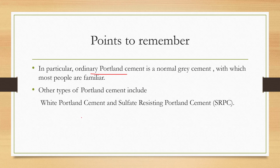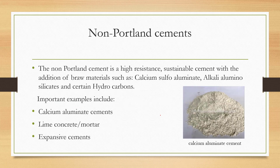Points to remember: ordinary Portland cement is a normal gray cement with which most people are familiar. Other types of Portland cements are white Portland cement and sulfate-resisting Portland cement.